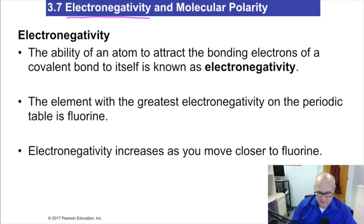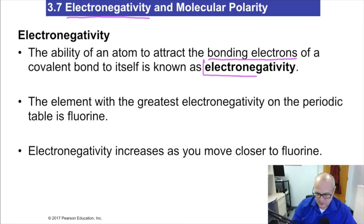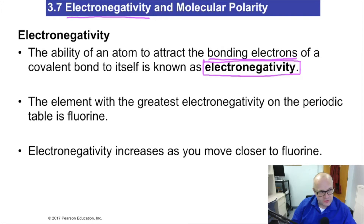Electronegativity — the ability of an atom to attract the bonding electrons of a covalent bond to itself — is known as electronegativity. Electronegativity is basically how good an atom is at attracting electrons to itself. In other words, how good are you at stealing electrons?